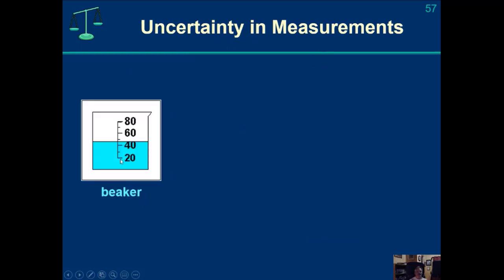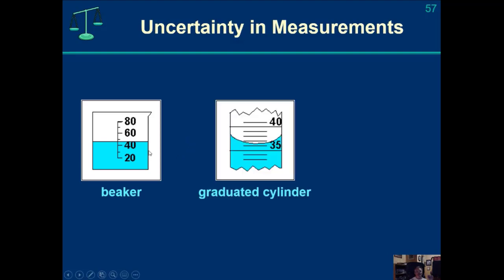Uncertainty in measurements. You will work in the lab with beakers. Beakers are not very precise or accurate measuring devices — they are meant as bulk containers to get approximately the amount of liquid you want. In this particular case, I know I have between 40 and 50 milliliters, but this could be 46, 47, or maybe 48 milliliters.